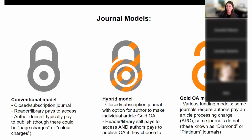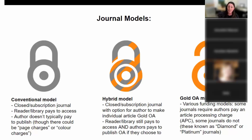Then there's the hybrid model — conventional journals that now make an option available to authors. If you do want to make your individual article available open access, you can, but you'll pay a very high fee — these are the highest fees. But the reader and the library will still pay to access the complete subscription. Maybe not your particular article, since you've paid to make it openly available, but the library is still paying a subscription to the entire journal. Libraries call this double dipping and consider it unethical. Some publishers are responding to that now, which is why we have some discounts on these fees.